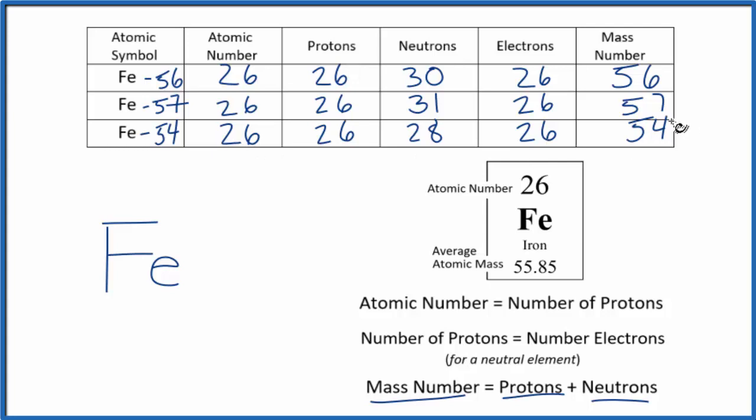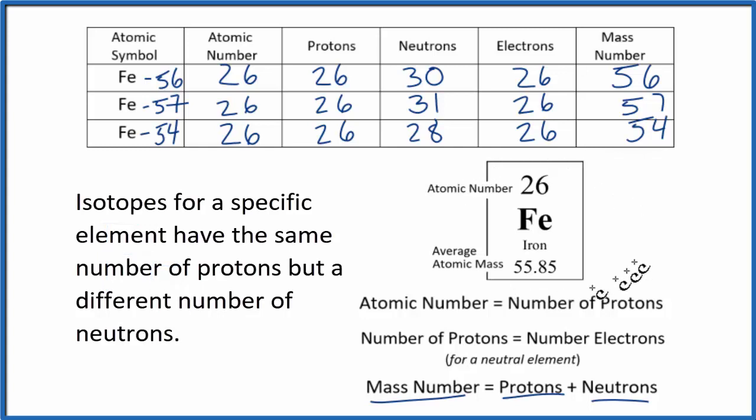So we have all this information here for iron, the three major isotopes. You can't just look at the periodic table and tell how many isotopes there are. There are actually a few other isotopes, kind of minor isotopes of iron.